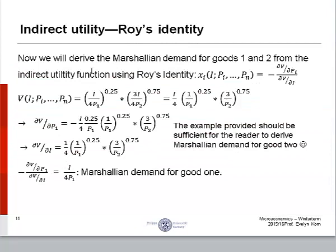And now we will derive Marshallian demand for goods 1 and 2 from the indirect utility function using Roy's identity. Roy's identity is fairly simple. It simply states that the Marshallian demand for good x1 is the derivative of the indirect utility function with respect to p1 divided by the derivative with respect to income, and then multiplied by negative 1. That's very long, but to summarize, it's just this little term right here.